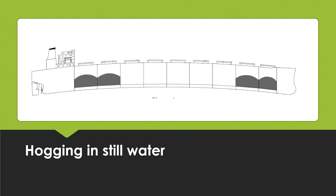Along the ship's length there will be local differences in the vertical forces of buoyancy and the ship's weight. These unbalanced net vertical forces acting along the length of the ship will cause the hull girder to shear and to bend, inducing a vertical still water shear force and still water bending moment at each section of the hull. What you see here now is hogging in still water.